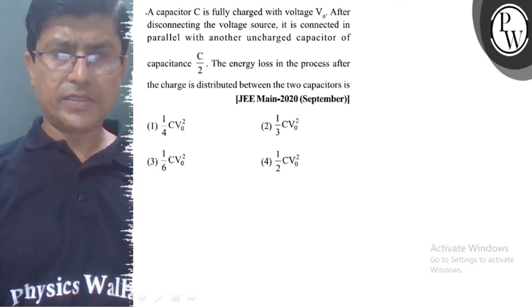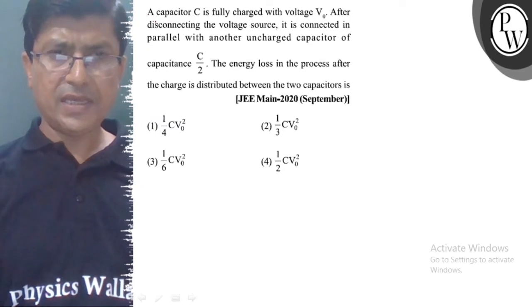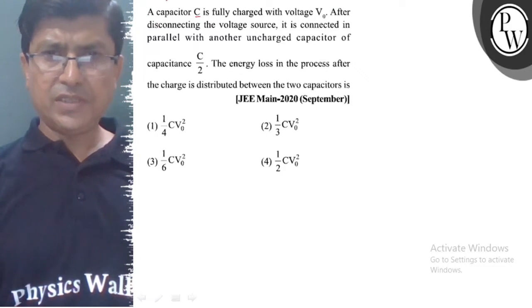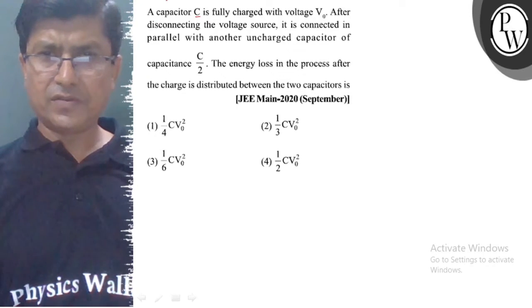Hello, let's understand the question first. Question kaita hai: a capacitor C is fully charged with voltage V0.